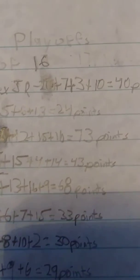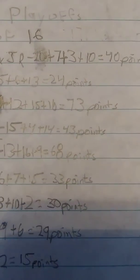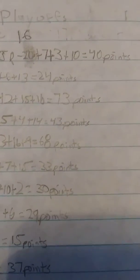Martin Truex Jr. has 40 points. Eric Almirola has 24. Kevin Harvick has 73. Kyle Busch has 43.